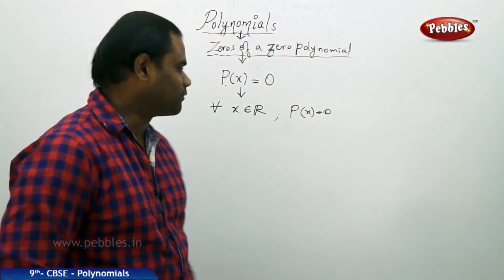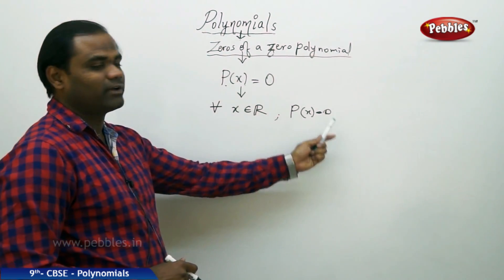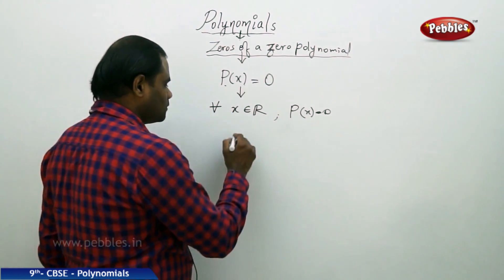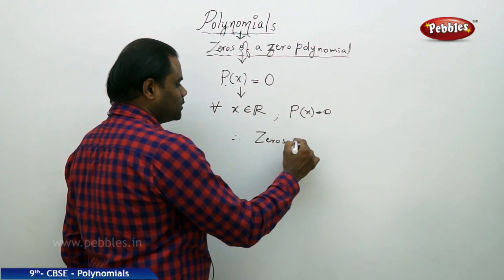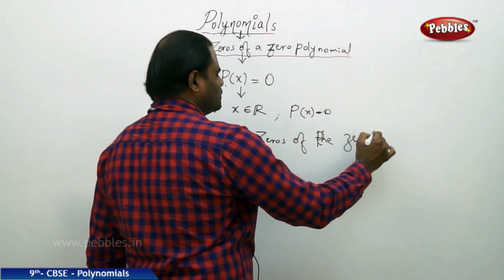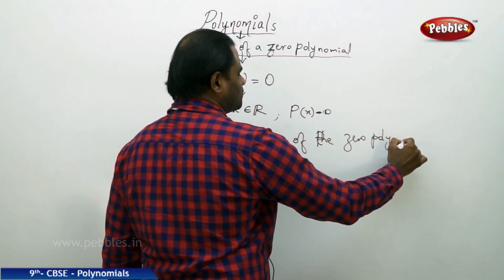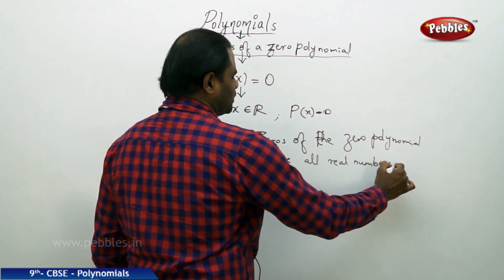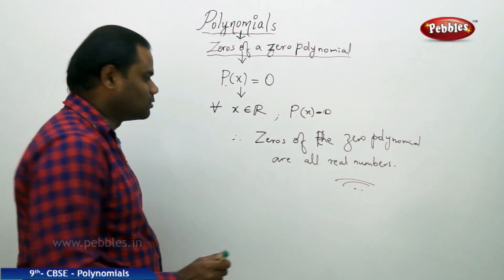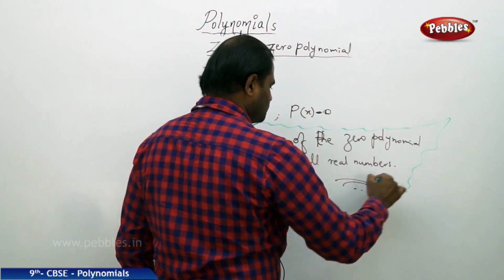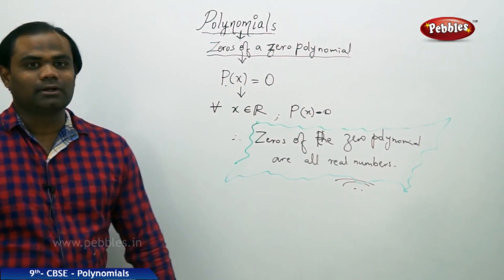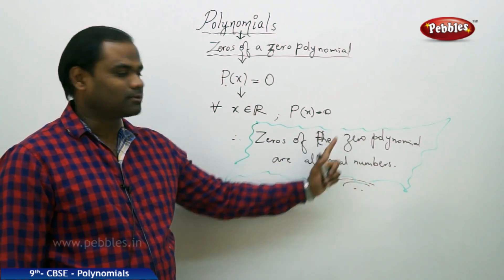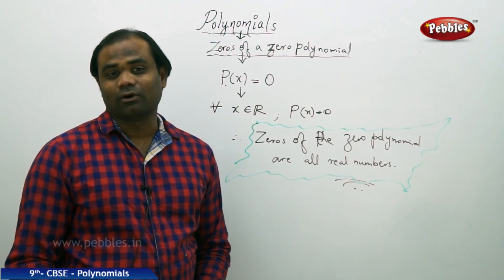The condition must be p of x equal to zero. Therefore, for every x belonging to real numbers, p of x equals zero — meaning for any real number substituted for x, I get the value zero. Therefore, the zeros of the zero polynomial are all real numbers, infinitely many real numbers belonging to the set of real numbers.